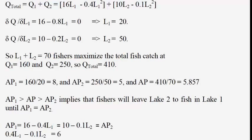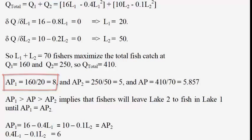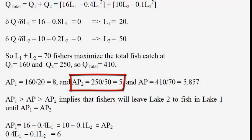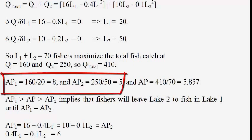This problem has many intriguing aspects. With 160 fish caught at lake 1 by 20 fishers, the average fish catch is 8 fish per person. With 250 fish caught by 50 fishers at lake 2, the average fish catch is 5. If you were fishing in lake 2 with an average catch of 5 and your brother was fishing in lake 1 with an average catch of 8, you would be tempted to leave lake 2 and go to lake 1, as long as nothing prevented this.